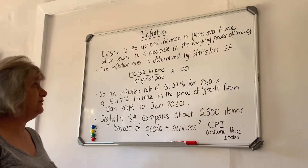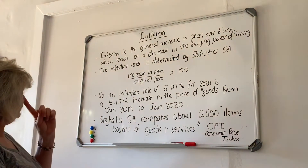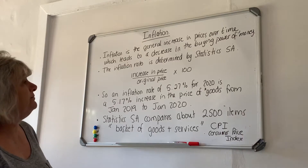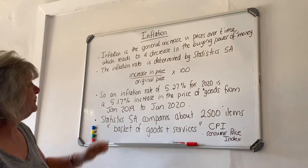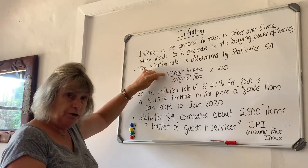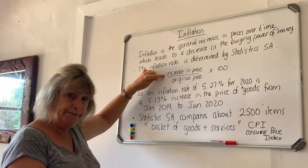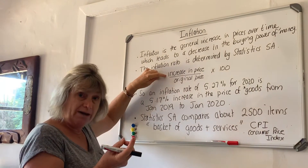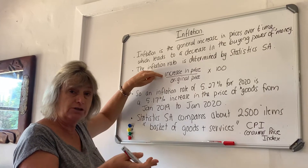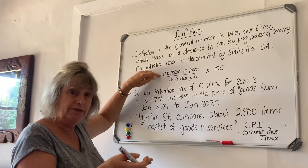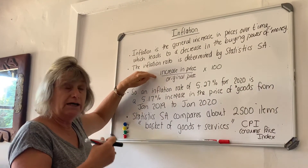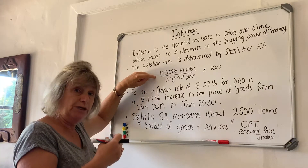So please know that definition. The inflation rate is determined by Statistics South Africa. They look at the increase in price over a period of time — it could be even just one month, looking at the change in price from the beginning of the month to the beginning of the next month. But more often our inflation rate is quoted per year.